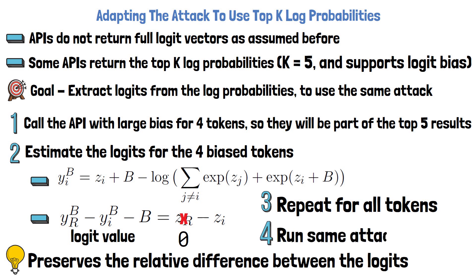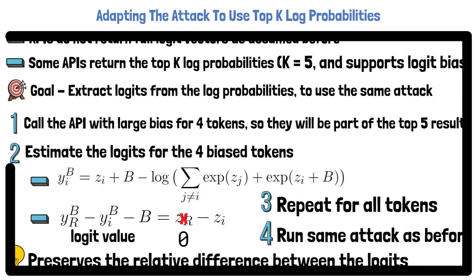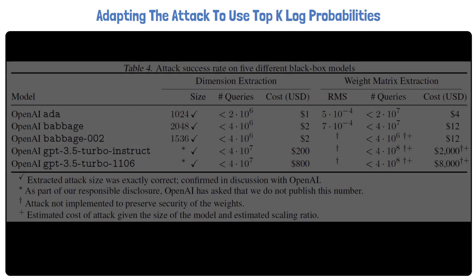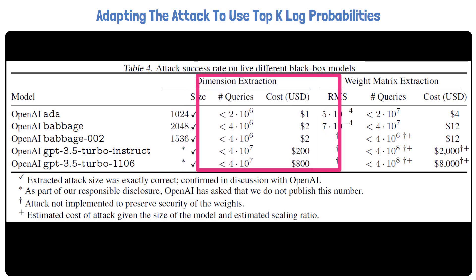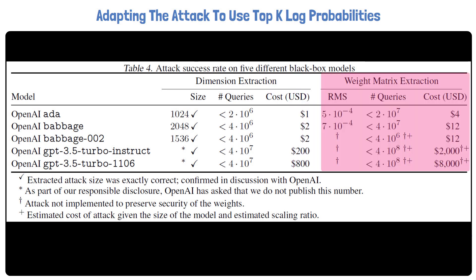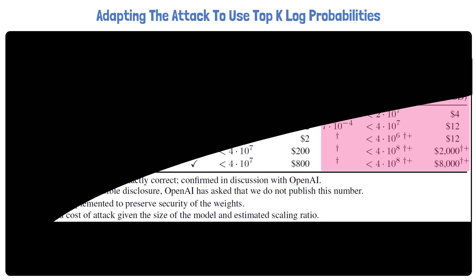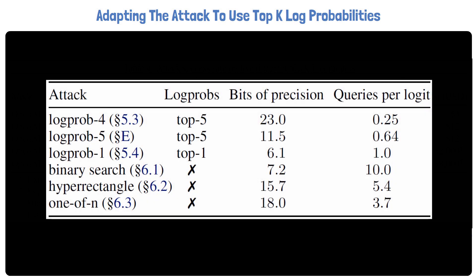The fourth step is to use the same attack as before, now that the full logit vector is available. This attack works quite well, as we can see in the following table from the paper, where a few black box models from OpenAI were attacked using that method. Starting with extracting only the hidden dimension, the researchers were able to obtain the precise hidden dimensions of all of these models, as confirmed with OpenAI, though they do not disclose the numbers for GPT-3.5 Turbo. They also share the cost of running the attack, which is not significant. On the right we can see the error when extracting the weight matrix and the cost for doing that, which is still not very significant. The attack was not executed on all models to preserve the security of the weights, and by now defenses have been placed against this attack.